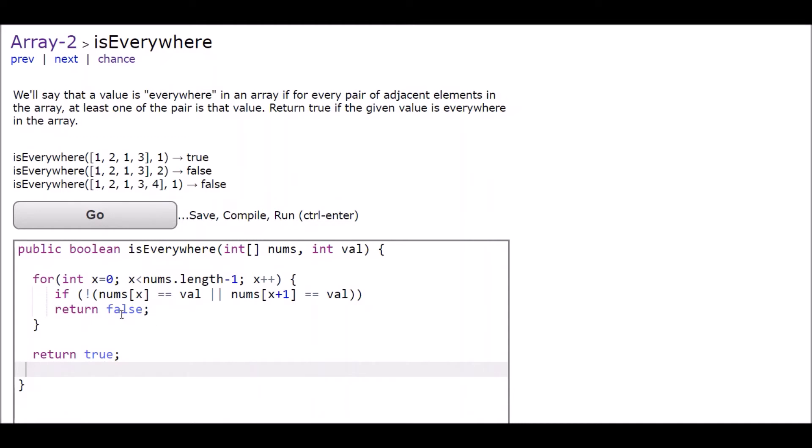Now, if that never happens, if I've gone through the entire array and I've never gotten to a pair that doesn't contain the value, I'm going to return true at the end.